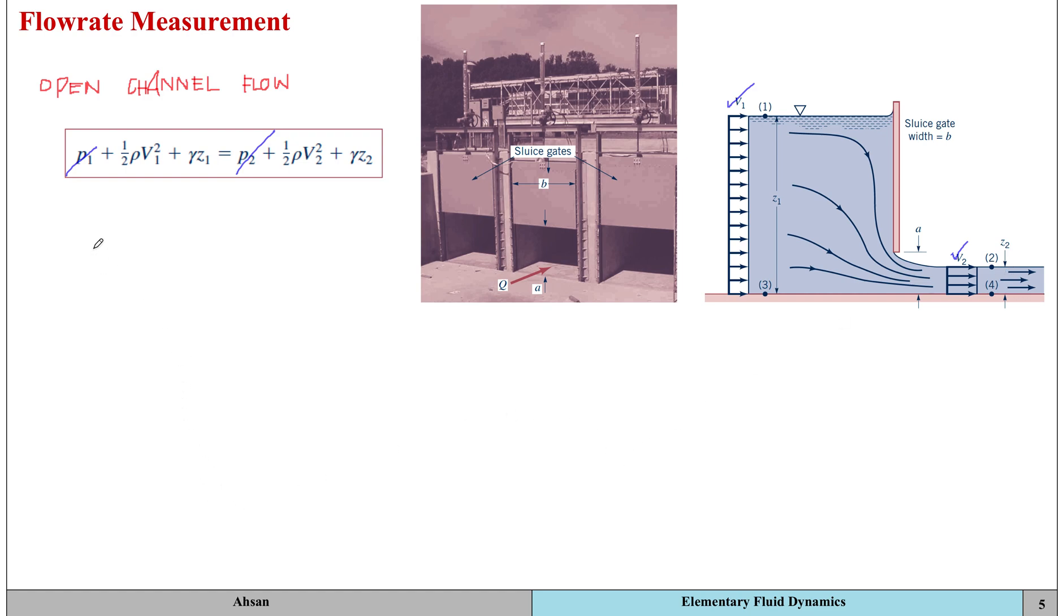We can apply the continuity equation, which is Q equals A1*V1 equals A2*V2. From here we can find the areas and substitute them. Then we can plug in the value of velocity at 2 from here into the equation and find out the flow rate.